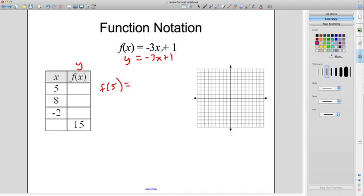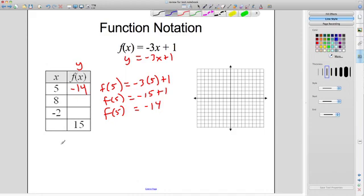Remember, f of x just means y. It's the same thing as saying y equals negative 3x plus 1. It's just a nice notation for certain things. So when I say the f of 5, when x is 5, you're going to replace all the x's up here with the number 5. And then it's just a matter of simplifying. What happens here? The f of 5 is really equal to negative 3 times 5 is negative 15 plus 1. This is going to equal negative 14. So the f of 5 is negative 14. That's what goes in here. Awesome. And then it's just a matter of repeating the process for the rest of them.